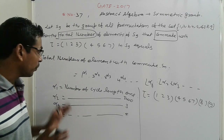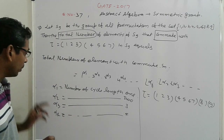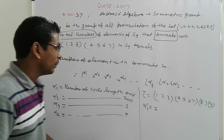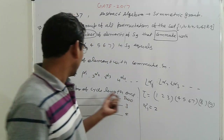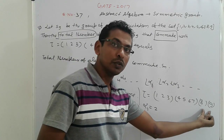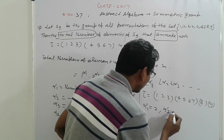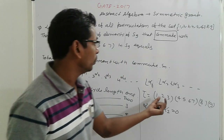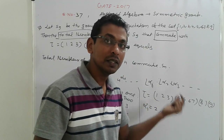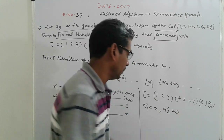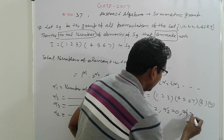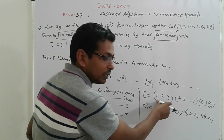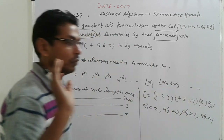Your work is to find out alpha-1, alpha-2, alpha-3. Alpha-1 is the number of cycles of length 1, which is 2. Alpha-2 is the number of cycles of length 2, which is 0 — none present. Alpha-3 is 1, and alpha-4 is 1.